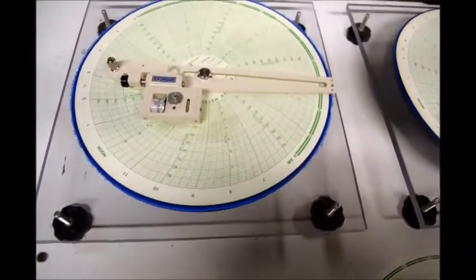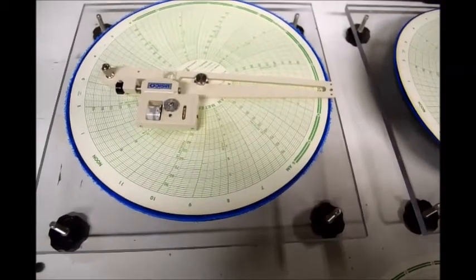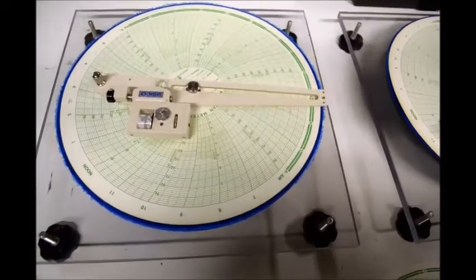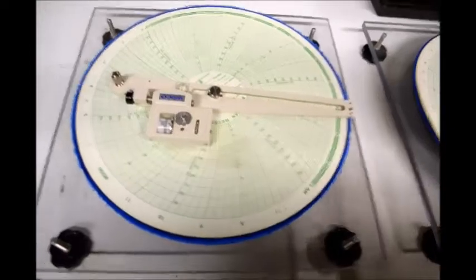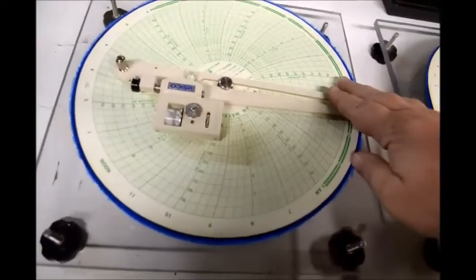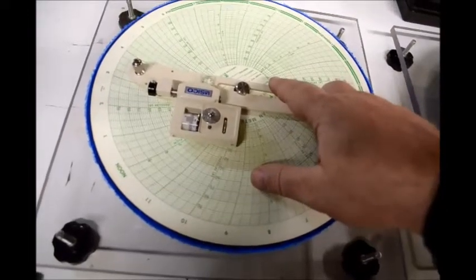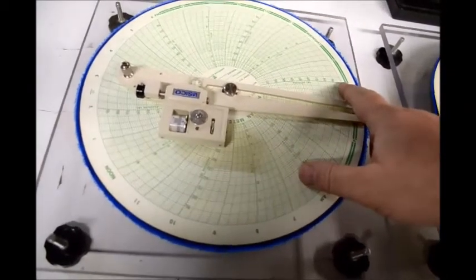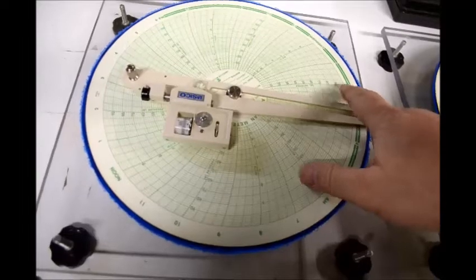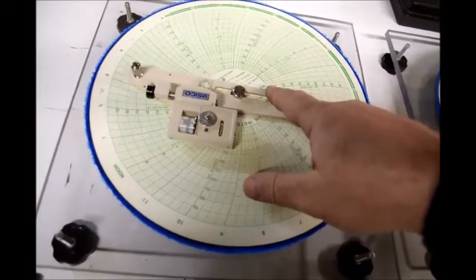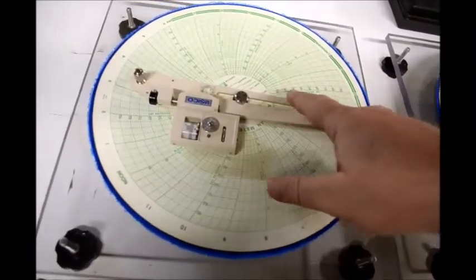There are two basic types of charts: linear charts and square root charts. This model 1000 reads linear charts. The scale is equally divided from the zero line to the outer line and in this case the scale is equally divided in 100 parts.